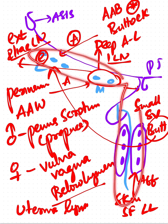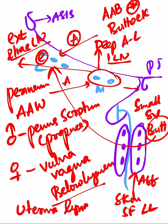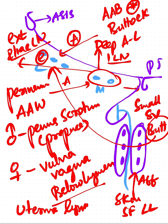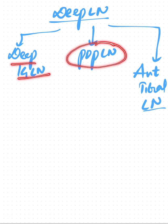The buttock region is being drained into the lateral members of the horizontal group, which is why it is excluded from the vertical group. If you see, the horizontal group and the vertical group are arranged in the form of a T-shaped structure. This is all about the superficial lymph nodes, which mainly include the superficial inguinal lymph nodes with horizontal and vertical members. Now let us go into the deep lymph nodes.